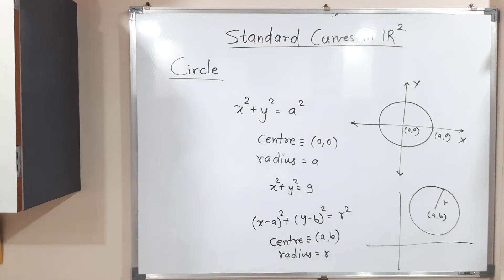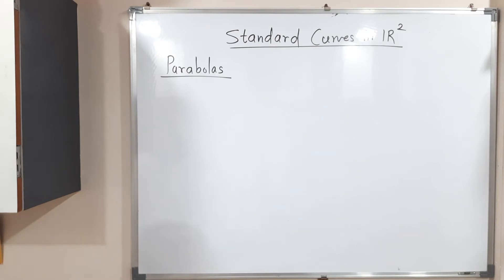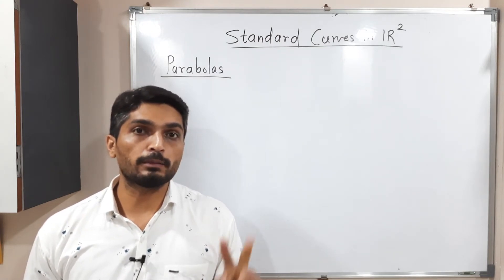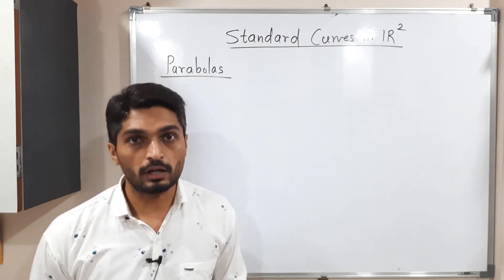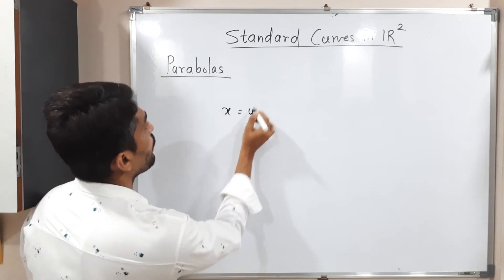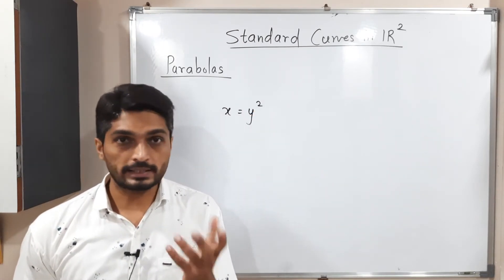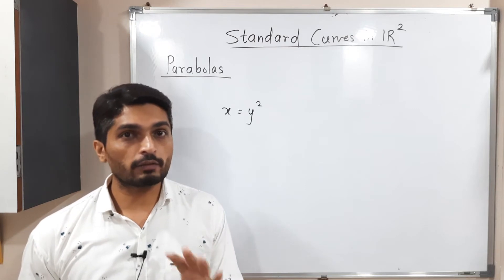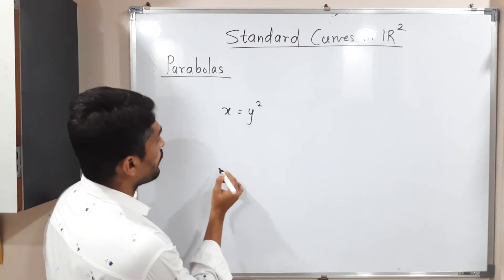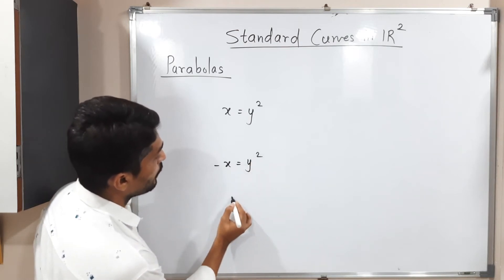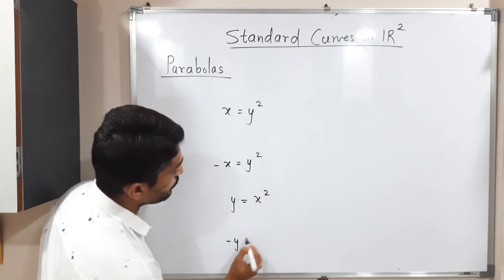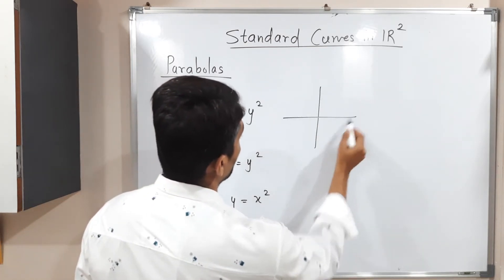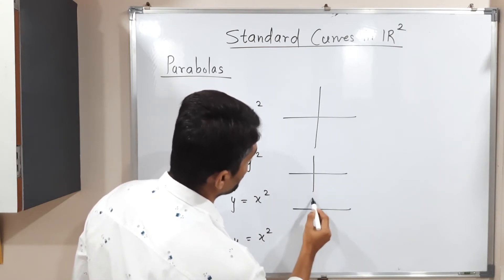After that, we will go for parabola. When the power of one variable is one and the power of the second variable is two, it is one hundred percent a parabola. For example, x = y². There are four standard parabolas: x = y², −x = y², y = x², and −y = x².